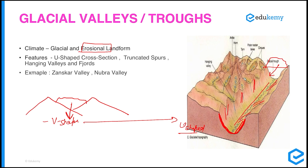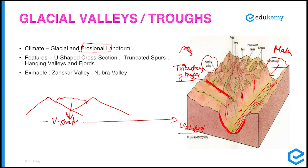Associated with glacial valleys are hanging valleys. A main glacier has tributary glaciers alongside it. The tributary glaciers erode and form a small valley above the main valley — this smaller valley is said to be hanging above the main valley, hence it is called a hanging valley. When ice at higher elevations melts, water flows through these hanging valleys and falls as waterfalls.